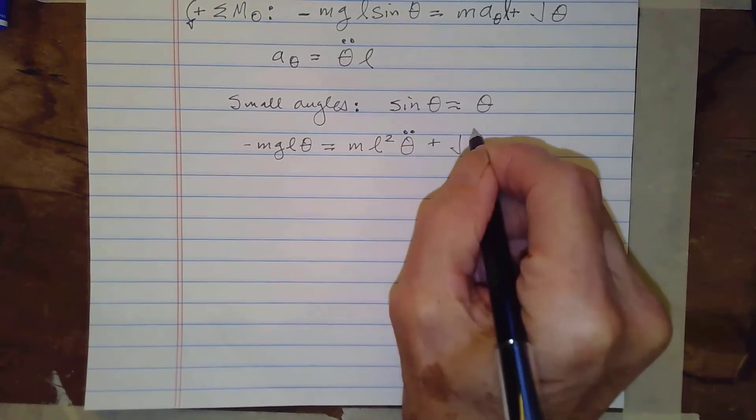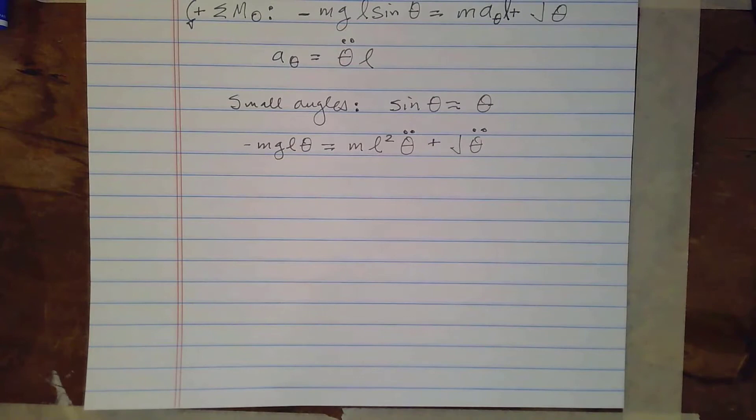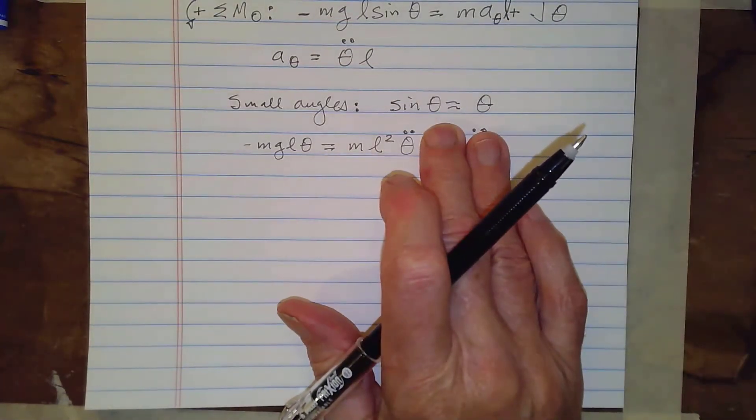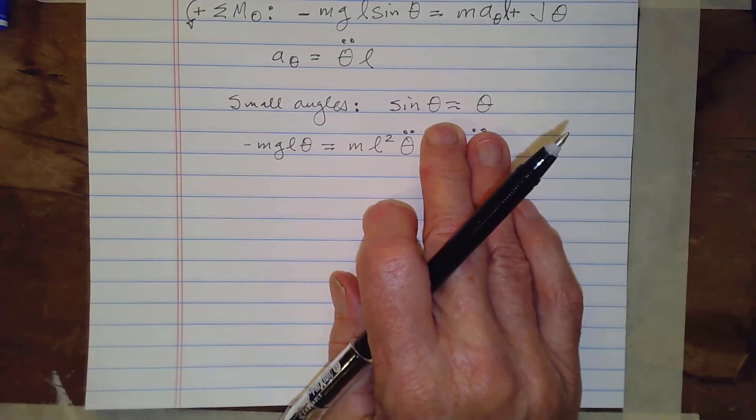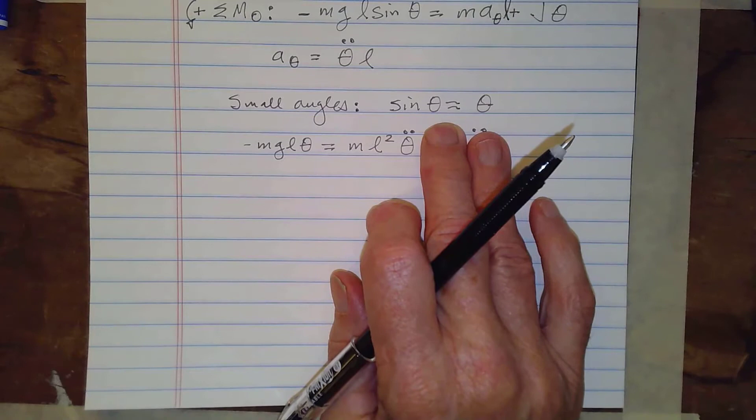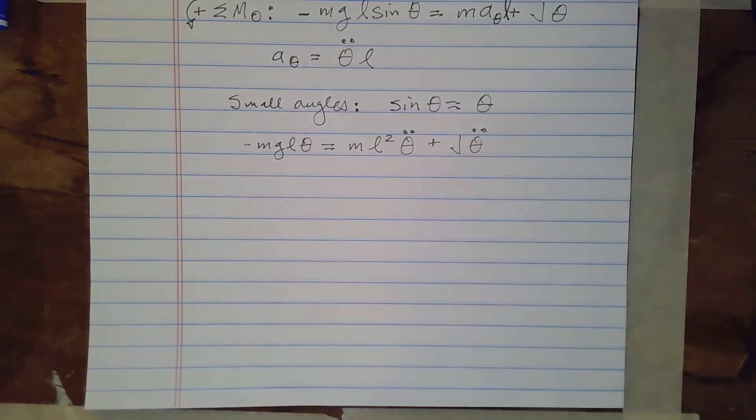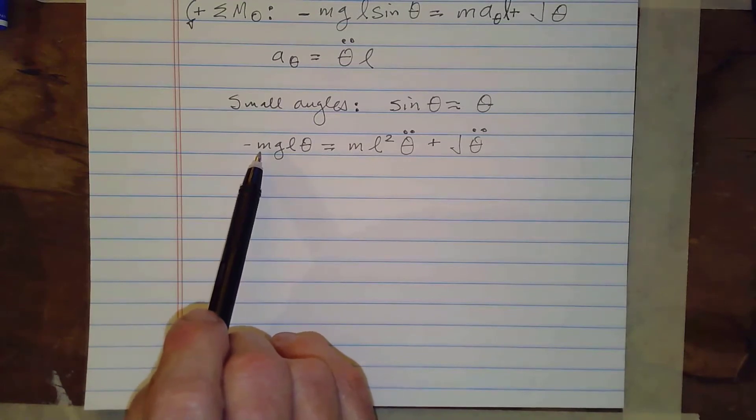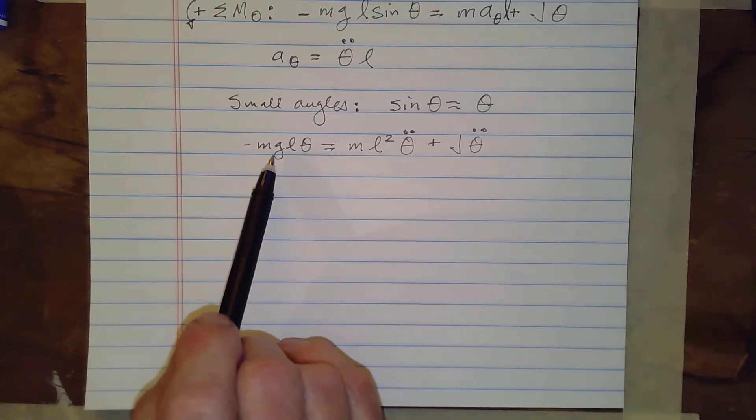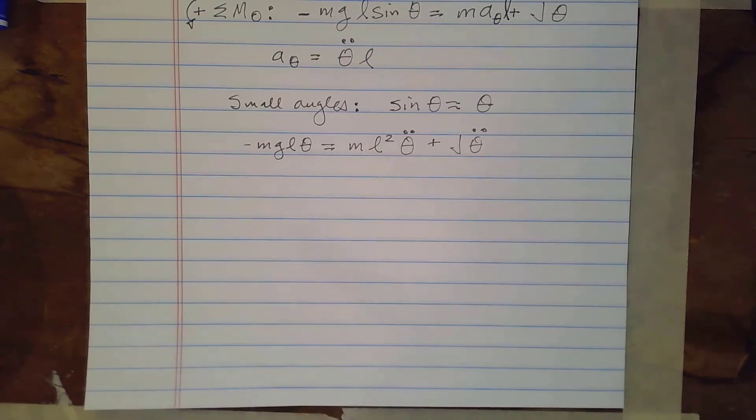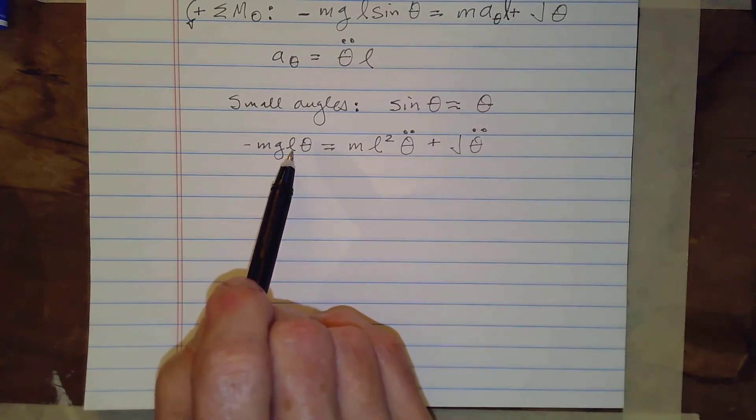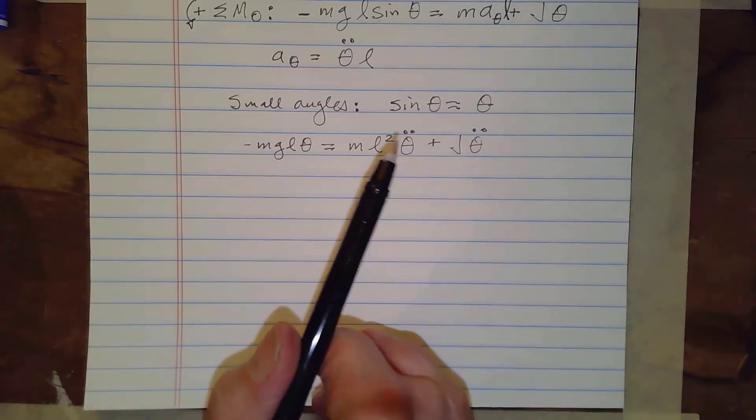Plus J theta double dot. Okay now because of the J we cannot cancel the mass out which we could do if that term weren't there. We could cancel the mass out we could cancel one of the L's out and you would see then that we have the same equation of motion that we have for a pendulum where we don't have to consider the resistance to rotation. But I can what I want to do well let's look at this I can weigh the object so I can actually get the mass from that. G we know what that is 9.81 meters per second squared. L we need to find the center of mass but once we find the center of mass then we can get L. What we don't know what we don't know is we don't know J.